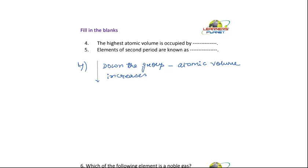So the highest volume will be occupied by the first group's last element. What is the first group? What are the first group elements? They are lithium, sodium, potassium, rubidium, cesium, and francium. So which will have the highest volume? Francium.